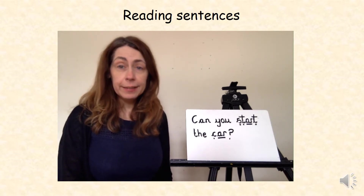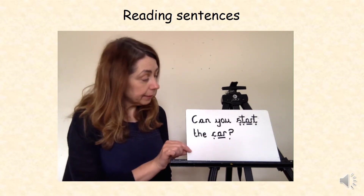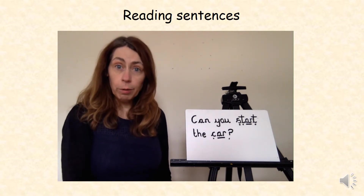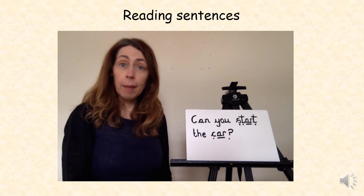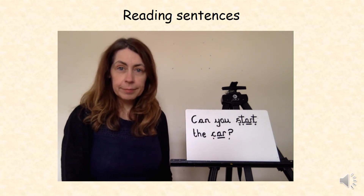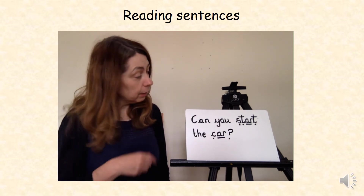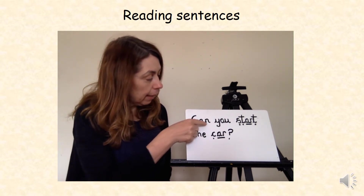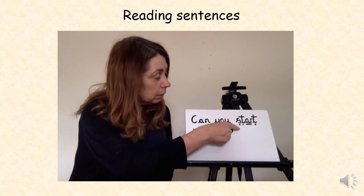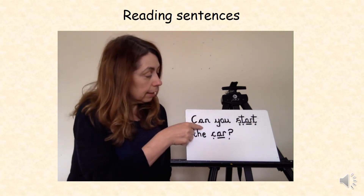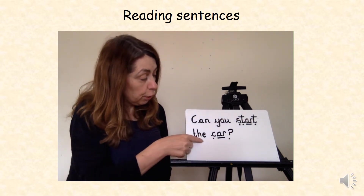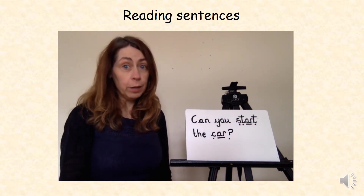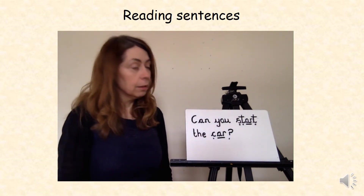Let's see if we can put all that learning together and read some sentences. This is a questioning sentence — it's got a question mark at the end. It's also got some tricky words and words that you can blend. Pause the video now and read it with your grown-up. Well done. Did you see the tricky words? There's 'you' and 'the.' Let's read it together: Can you start the car? Did you see the word that starts with an s and a t? Start. Well done everyone.